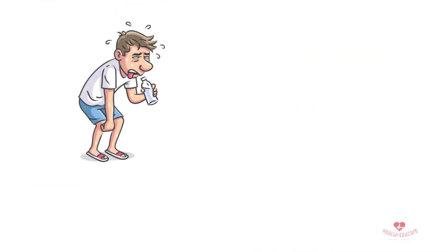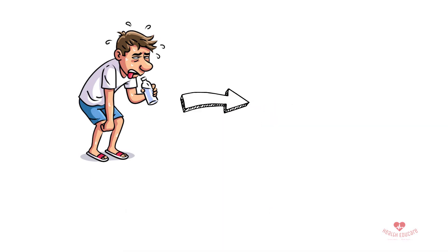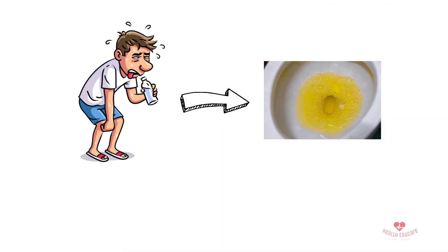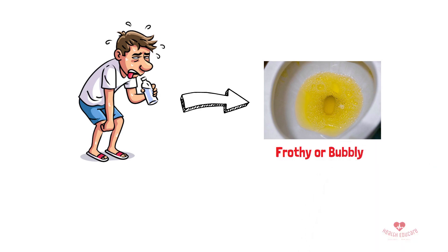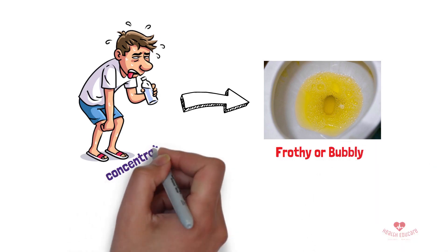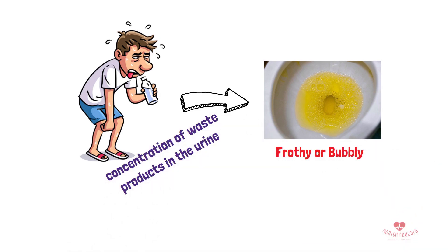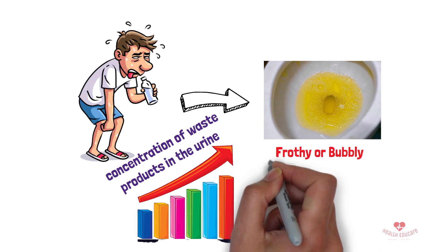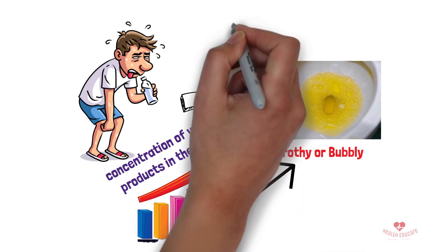One possible cause of bubbly urine is dehydration. When the body is dehydrated, urine becomes more concentrated and can appear frothy or bubbly. This is because the concentration of waste products in the urine is higher, which can cause it to foam when it hits the toilet bowl.